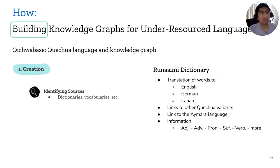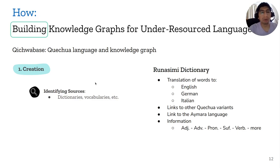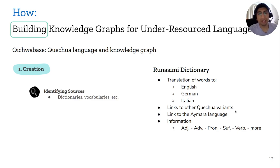In the case of the Quechua language, we built Quechua Base, a Quechua language knowledge graph. Following our process model, we start with creation, identifying sources such as dictionaries and vocabularies. We collected the Runesimu dictionary, which has translations of words to English, German, Italian, and Spanish. Those words also link to other Quechua variants, since Quechua is a family of languages — not just one. There is also information about adjectives, adverbs, pronouns, suffixes, verbs, and more.